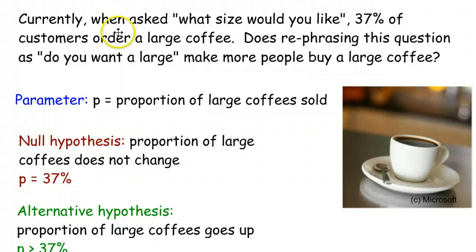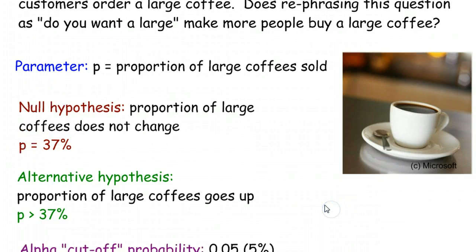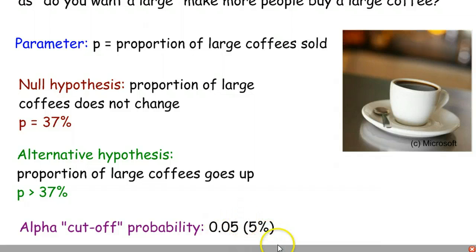We wanted to know if the proportion of large coffees sold was going to go up when we mentioned 'would you like a large,' or if the null hypothesis was going to be true that changing what you say to customers was not going to change the proportion of customers that actually bought from you. We had our alpha of 0.05.